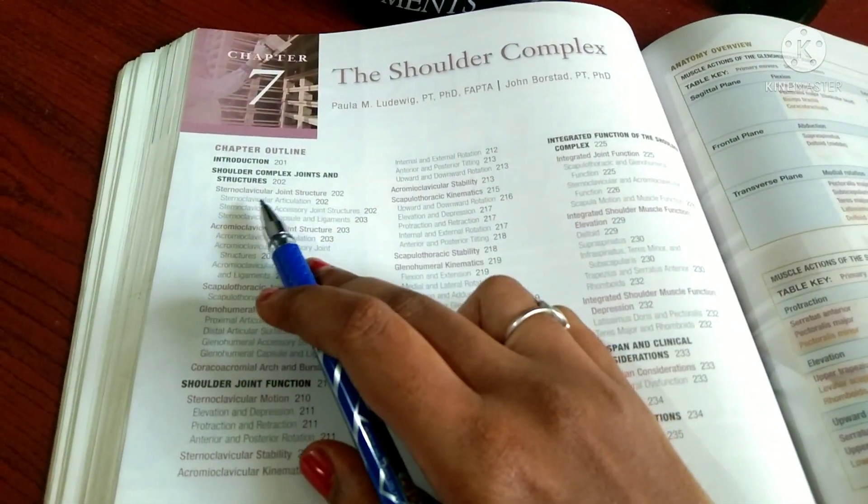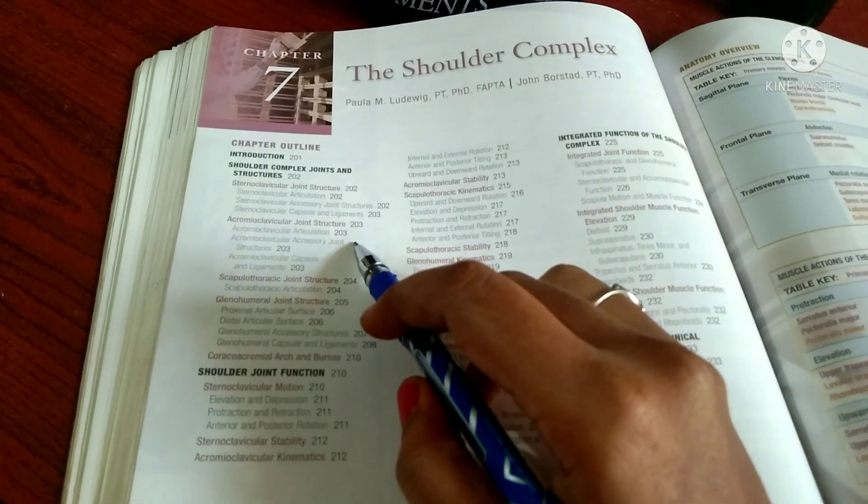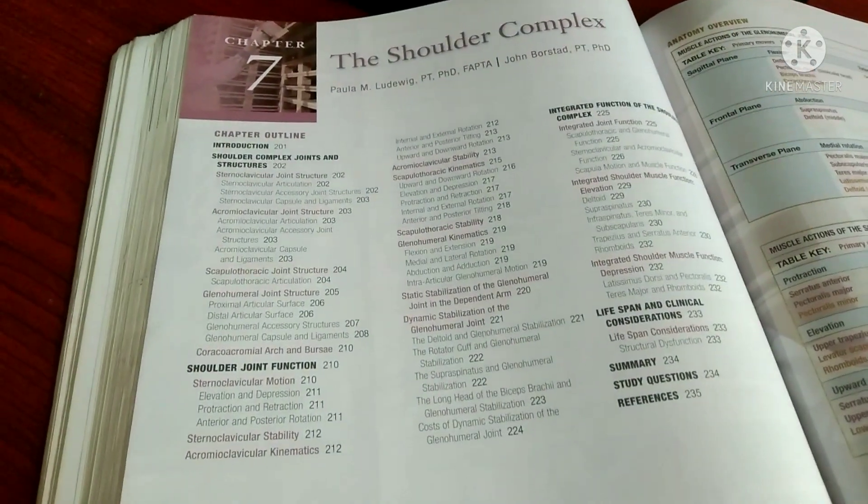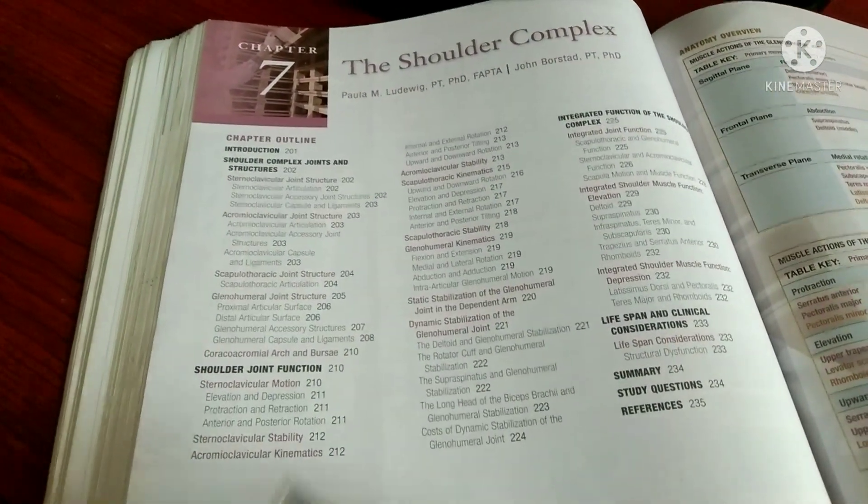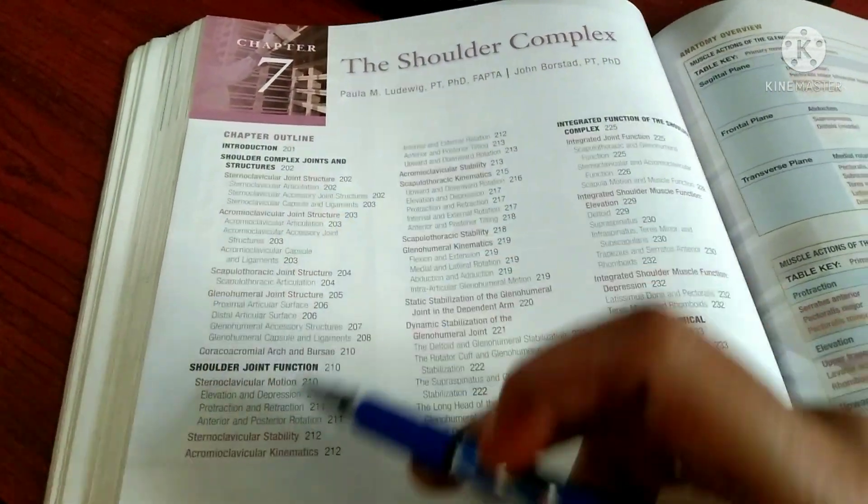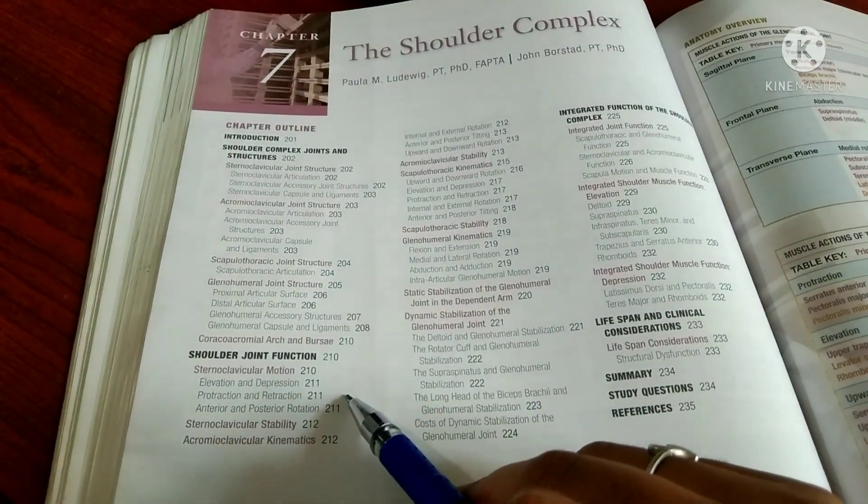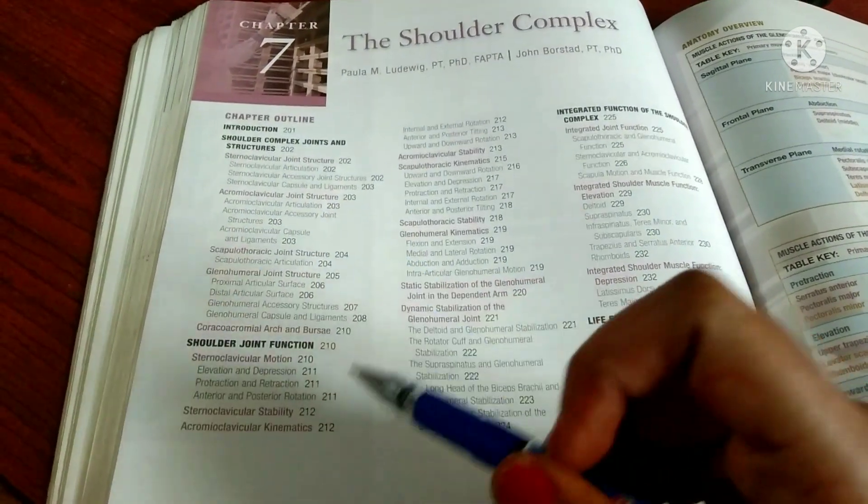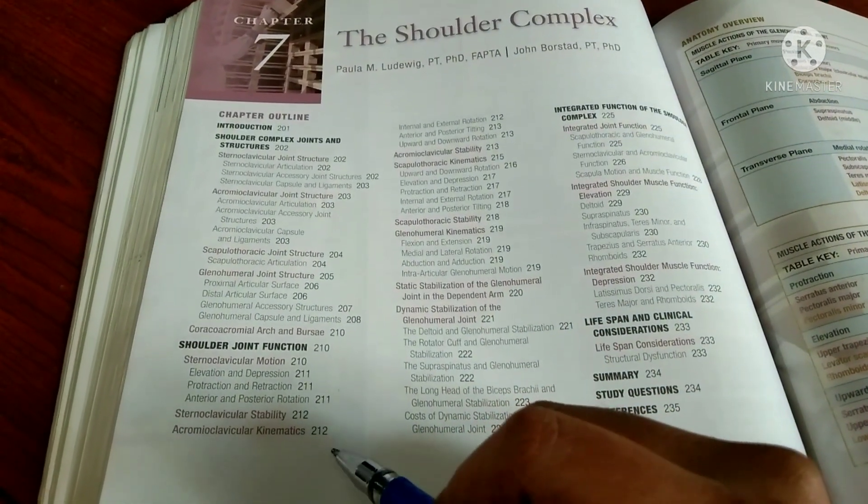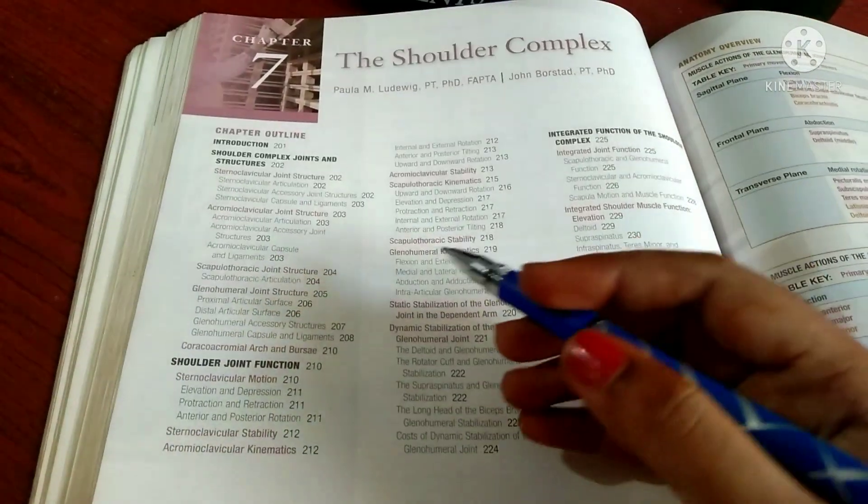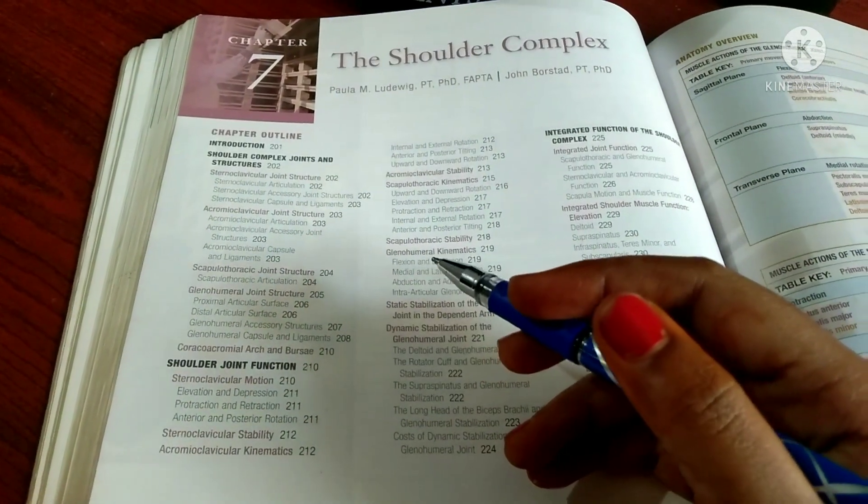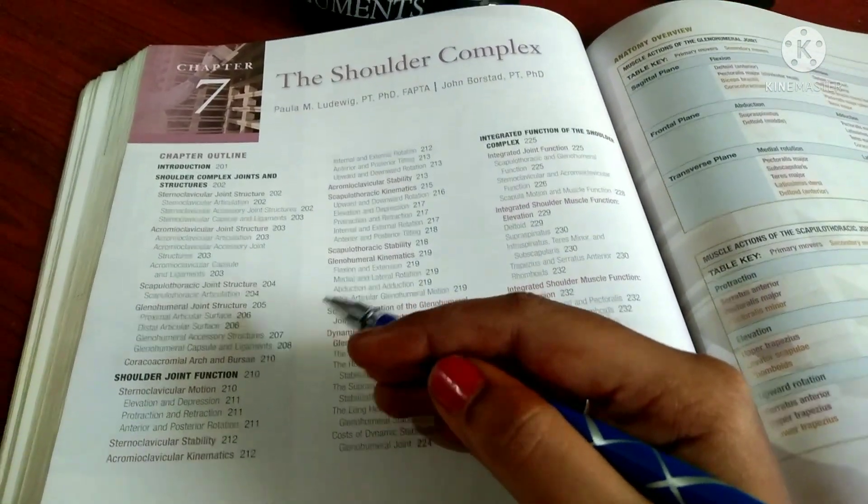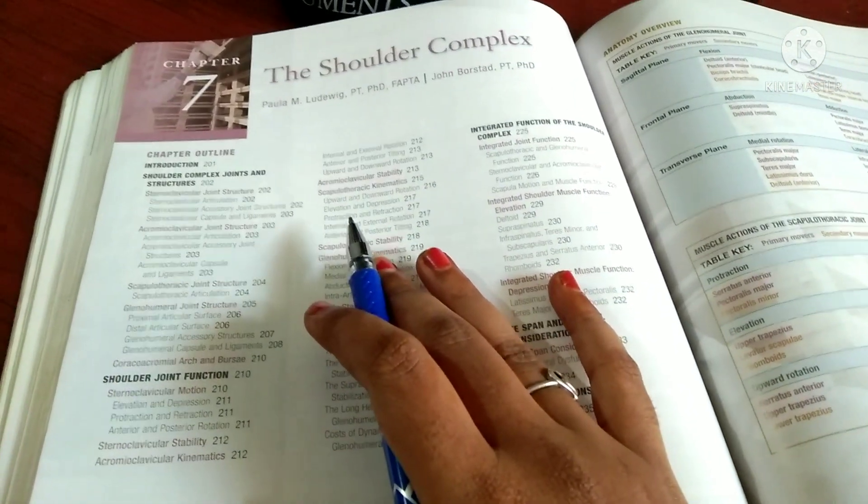For example, you are going through shoulder complex. Go through the introduction first, then the joints. First you're taking sternoclavicular joint, then acromioclavicular. When you're going through sternoclavicular joint, study the functions also. You already know the anatomy from first year, so when you understand the structure, simultaneously go through the functions. It will be easy.